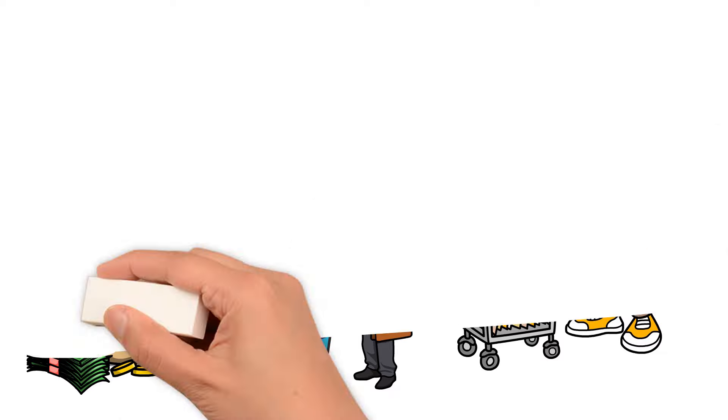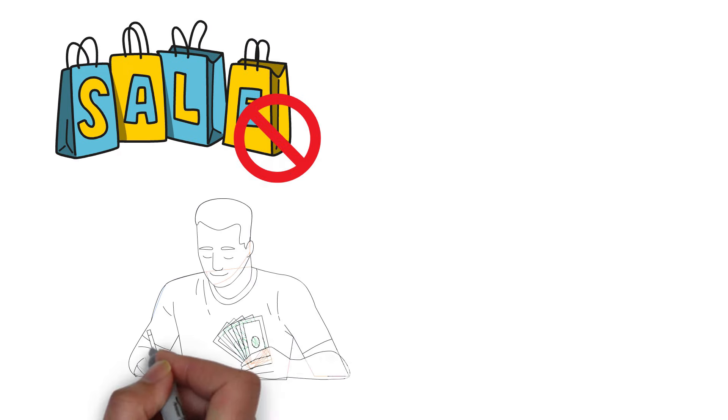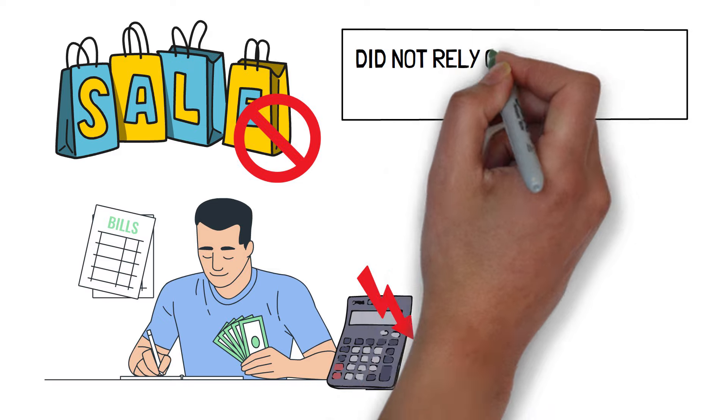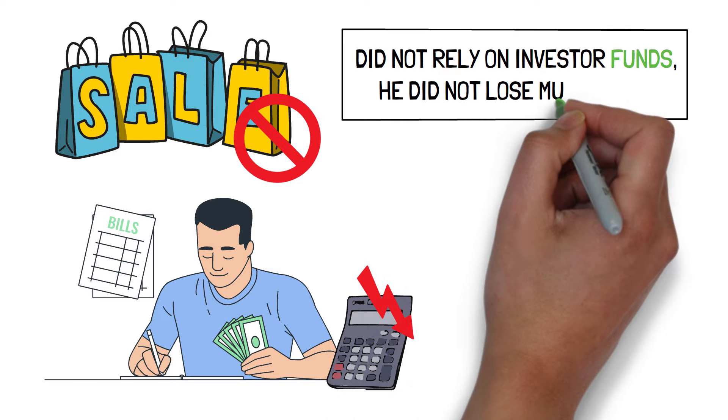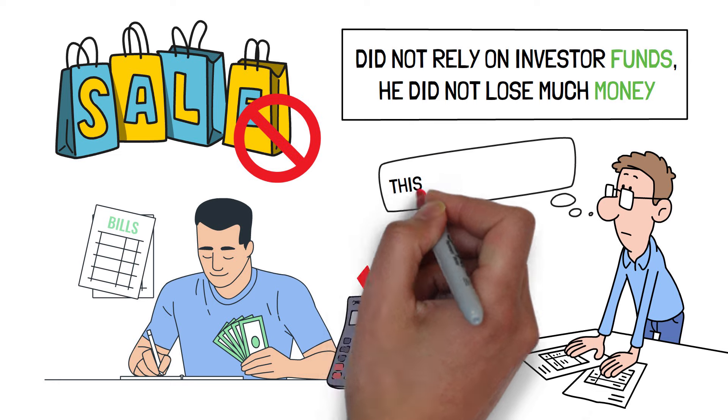In the second scenario, Tom's product did not sell either, but because he kept his expenses low and did not rely on investor funds, he did not lose much money. He only lasted a few weeks before realizing that this plan was a failure.